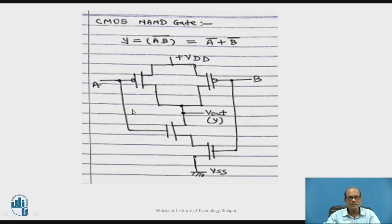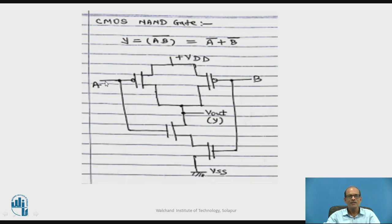We can verify whether the circuit works as a two-input NAND gate. The two P-MOSFETs are connected in parallel, and the source of these two P-MOSFETs goes to VDD. The drain of the two P-MOSFETs goes to the output. From the output, two NMOSFETs are connected in series. Input A is applied to the gate of one P-MOS and one NMOS; similarly, input B is applied to the gate of the other P-MOS and NMOS.